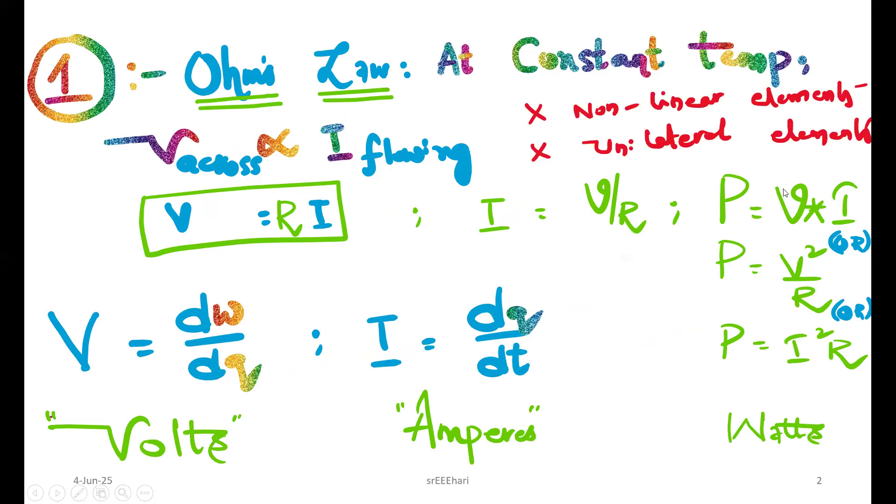The first definition: Ohm's law. At constant temperature, V is directly related to I, and the formula is V equal to IR. From that, I equal to V by R. We have some power formulas: P equal to VI, V square by R, I square R, and these are the voltage and current equations.